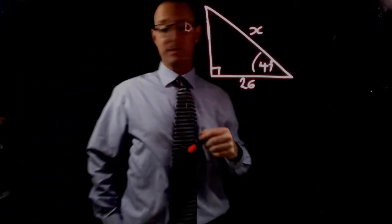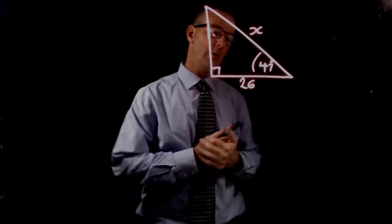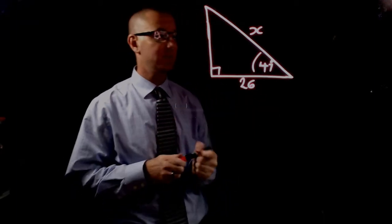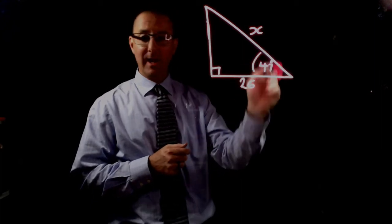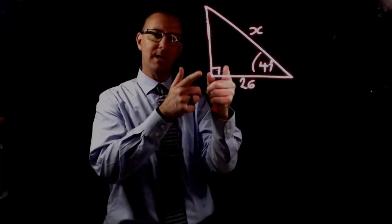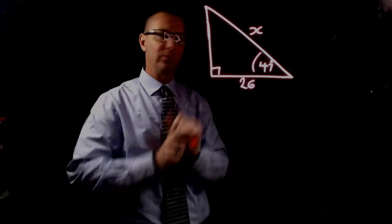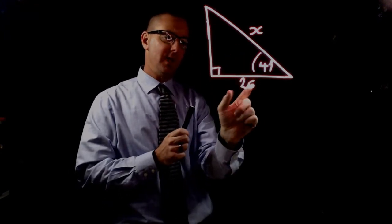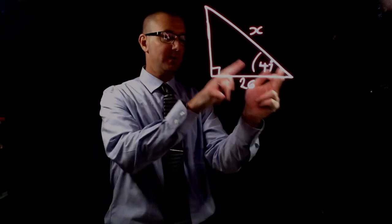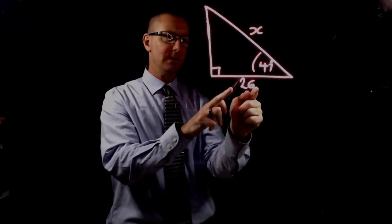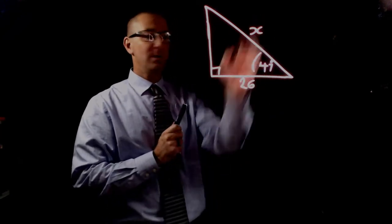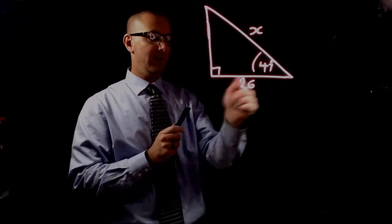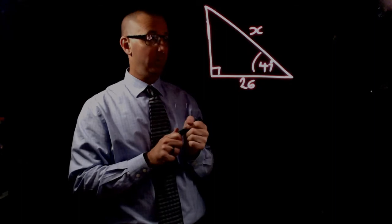This video demonstrates solving for the denominator using trigonometric ratios. In this example, we have a right-angled triangle indicated by the square in the corner, with an angle of 47 degrees. We know the adjacent side is 26, and we need to find the hypotenuse side.